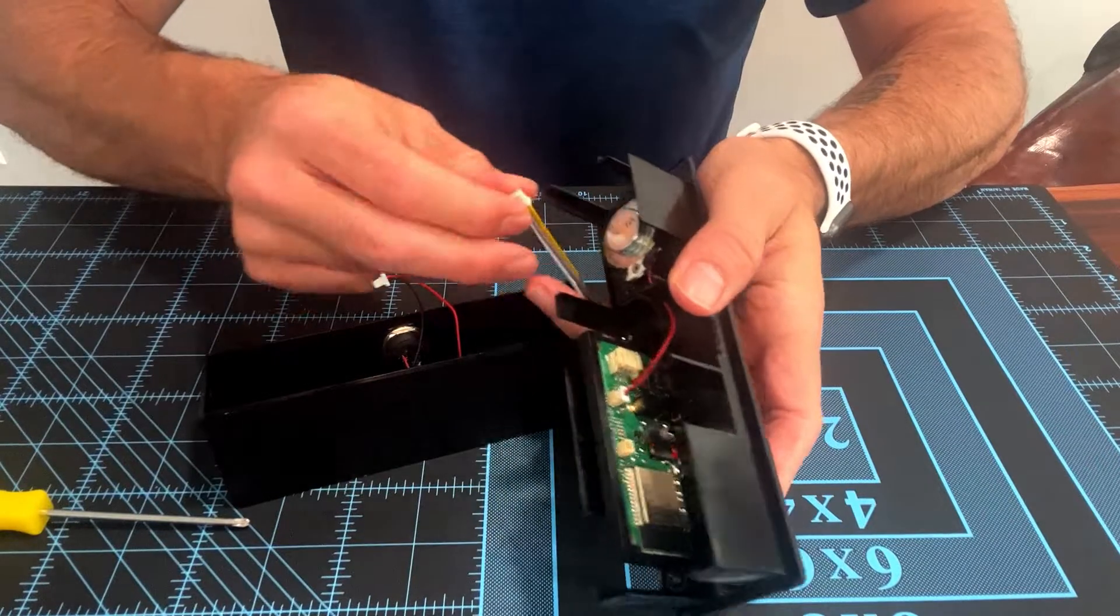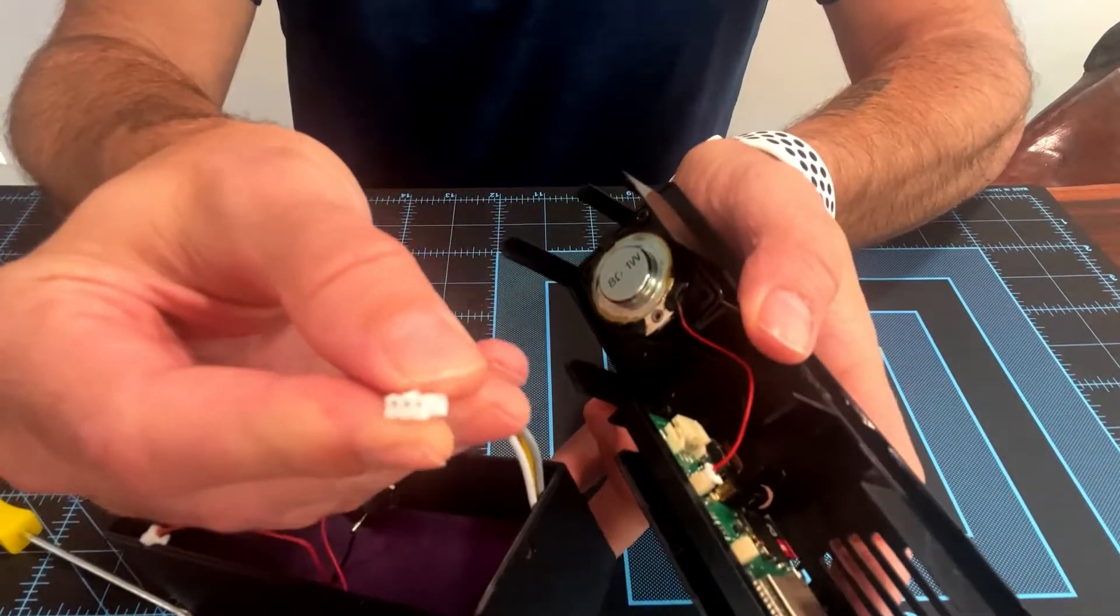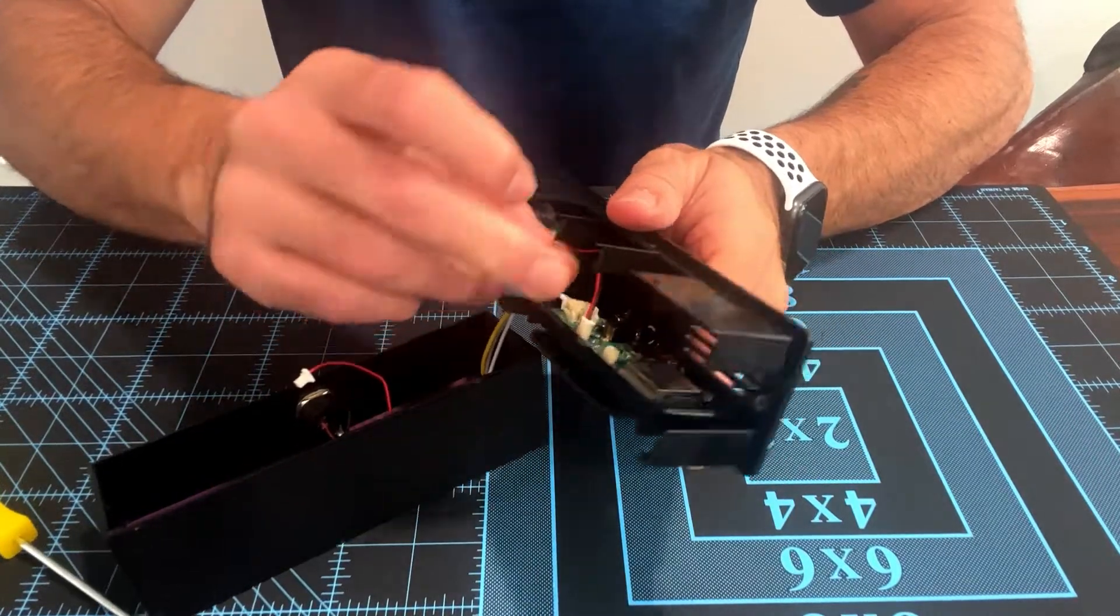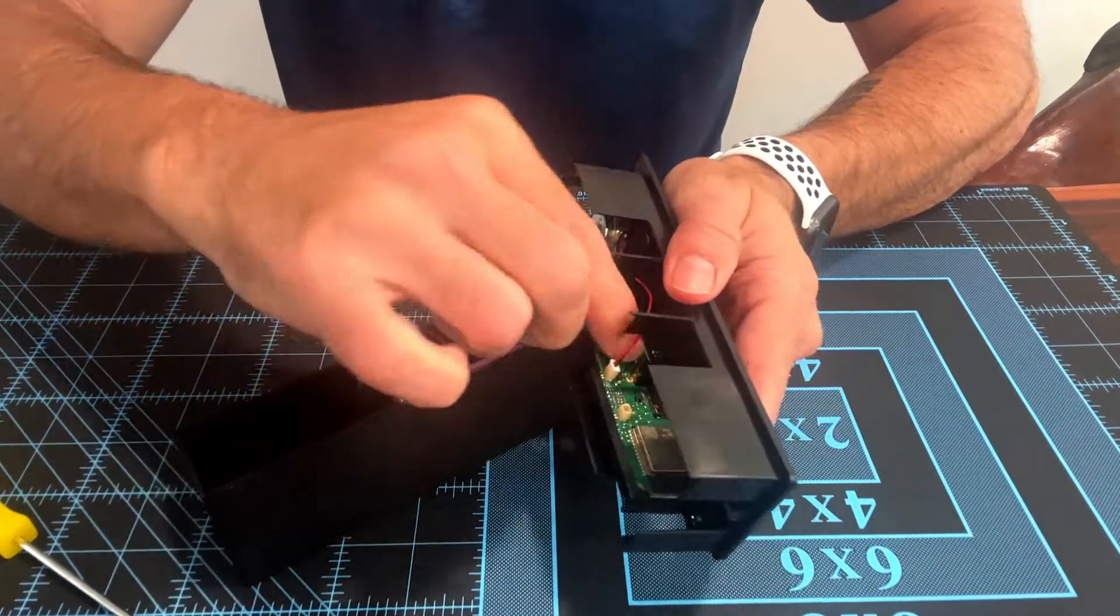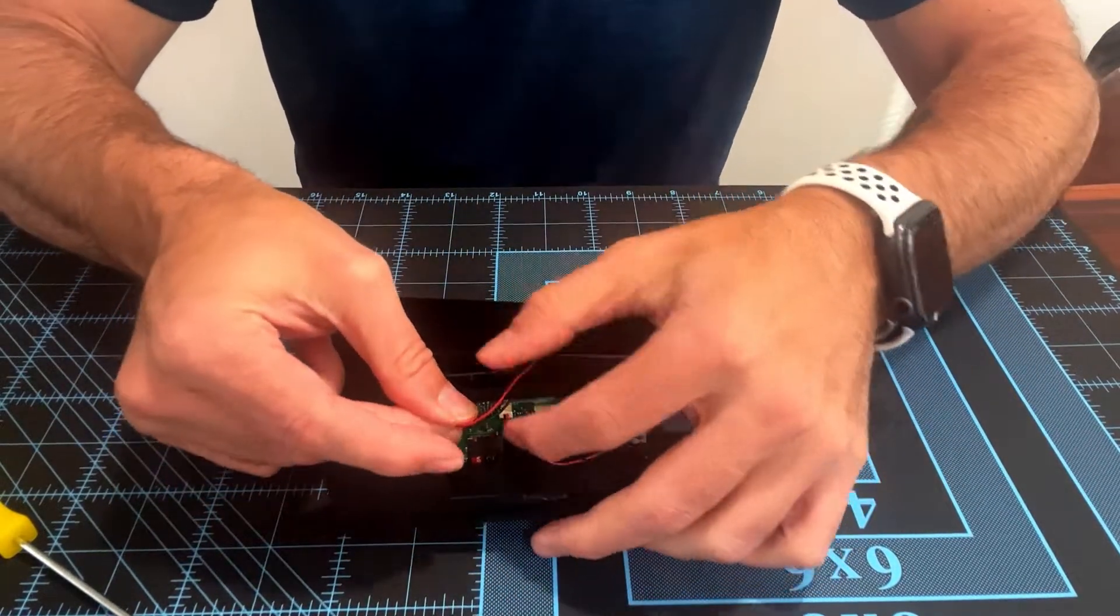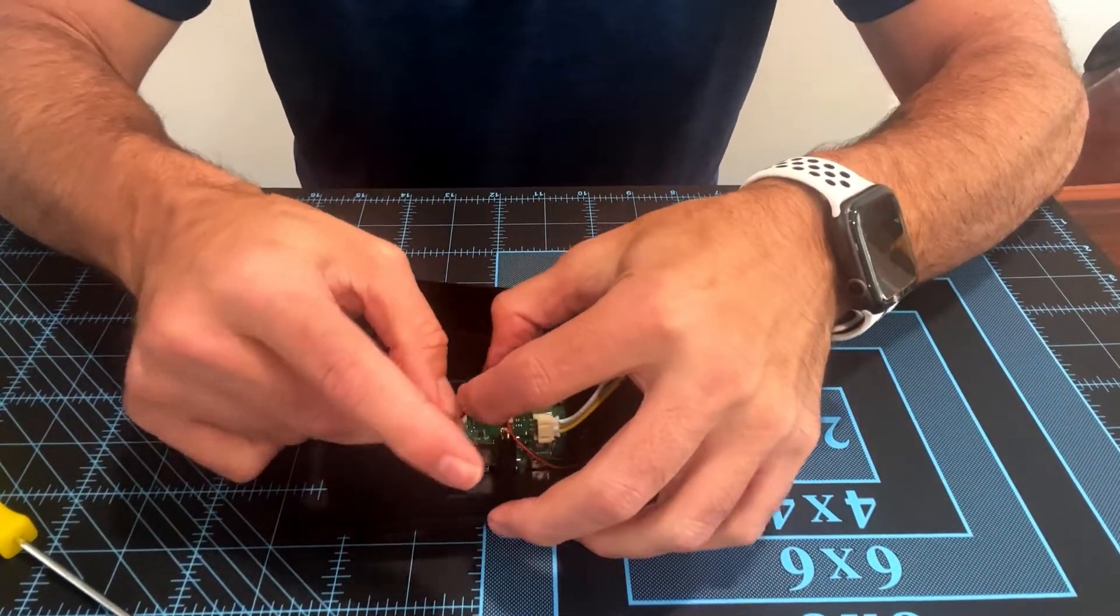Now for the LED, it also has one side with a raised bump that goes towards the top. So we're just going to slide this in and again push it in with your fingernails, and then attach the button.